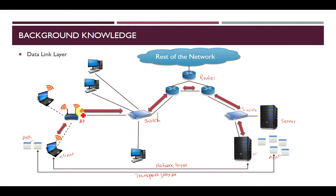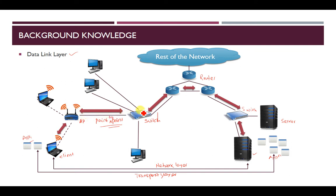Now what about the intermediate points — who takes care of whether the data has traveled from the switch to the router, or from router to router? This type of communication is called point-to-point communication, and it is maintained by your data link layer. The data link layer is responsible for transferring data from one node to another node — not the endpoints, but the adjacent intermediate links.